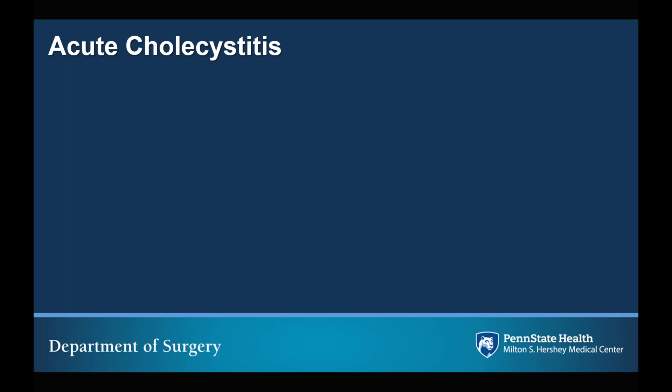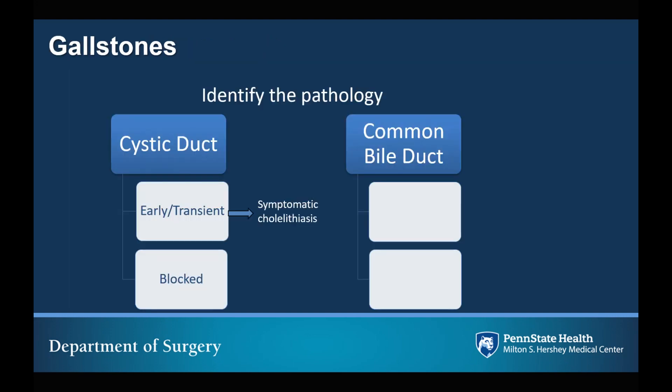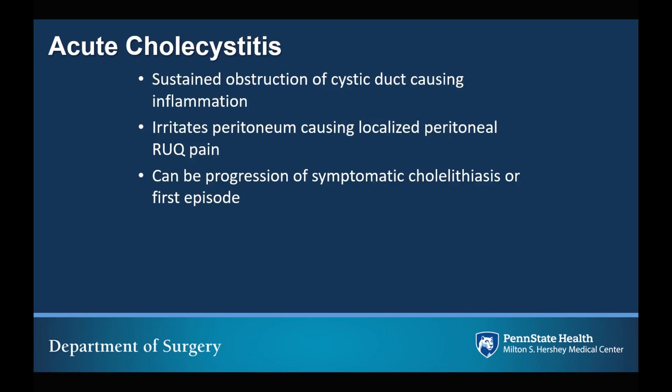Moving on to acute cholecystitis — going back to our initial diagram, this is permanent blockage of the cystic duct, which in turn results in inflammation and infection. This is sustained obstruction of the cystic duct. The inflammation that results causes irritation of the peritoneum, which in turn results in localized peritoneal right upper quadrant abdominal pain. This can be a progression of multiple episodes of symptomatic cholelithiasis, or it could occur on the patient's very first episode of biliary colic.